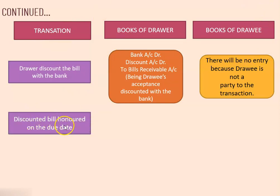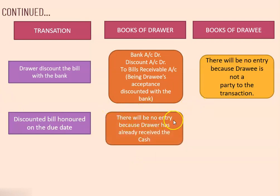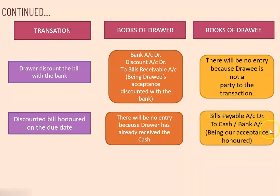When the discounted bill is honored on the due date, after completing the period — say two months — the drawee does the payment of the bill. In the drawer's book, there will be no entry because the drawer has already received the cash; the ownership was transferred since the bank made payment to the drawer before the due date. On the due date, the money is paid to the bank by the drawee. In the drawee's book, bills payable account is debited to cash or bank account.